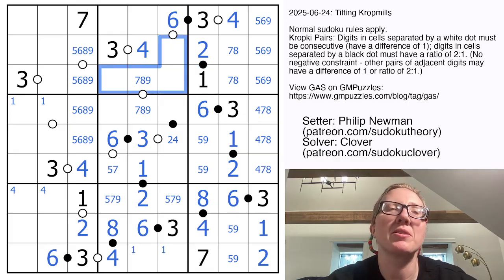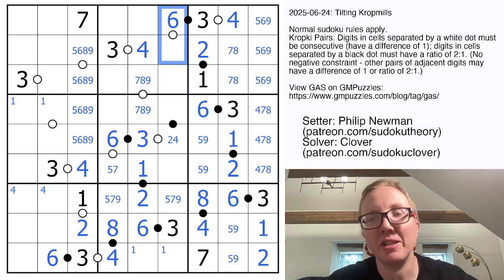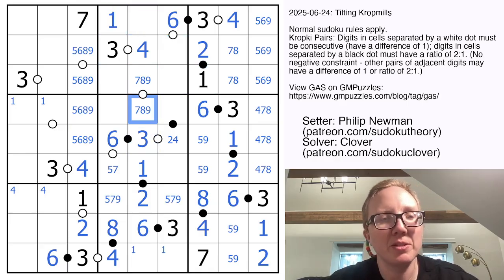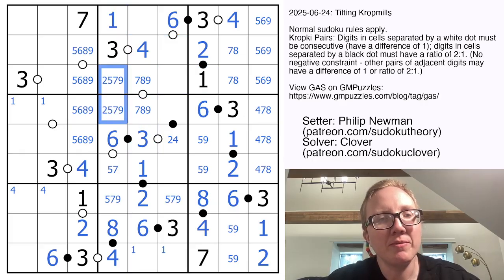I do see something. I have a hidden 1 in this region because I can't have a 1 here. 1 isn't next to 6, there's a 1 in this row already, and there's a 1 in this column. So that's going to be a 1. And then these are going to be from 2, 5, 7, and 9.